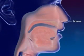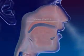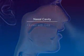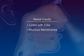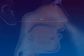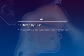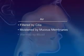Nairs are the openings to the nose. The nasal cavity is lined with cilia, mucous membranes, and blood capillaries. The air is filtered by cilia, moistened by mucous membranes, and warmed by the blood.